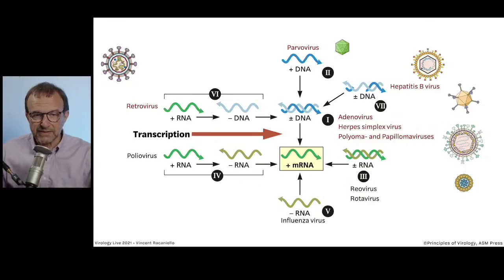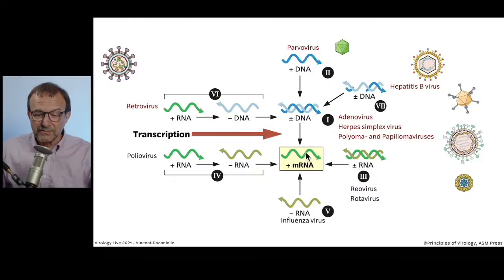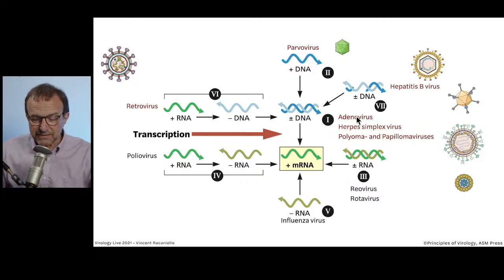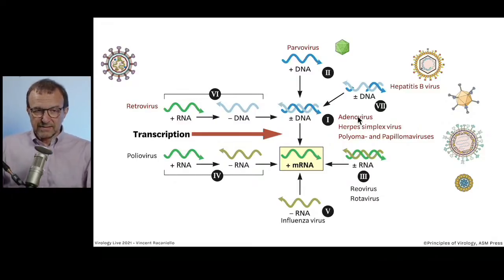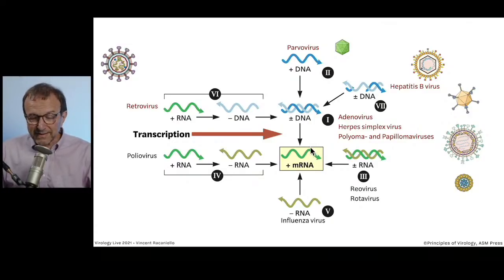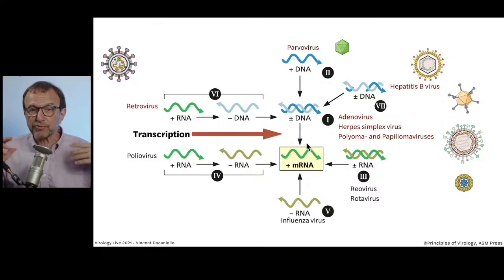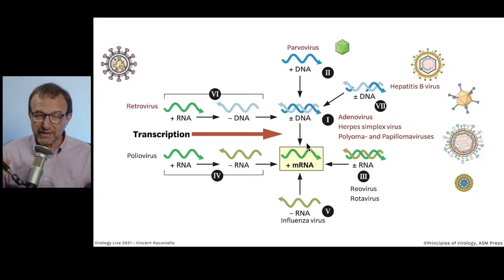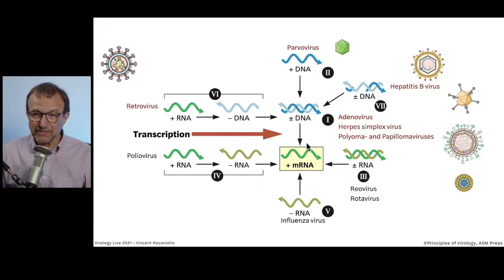Let's summarize. Transcription is the production of mRNA from double-stranded DNA. It occurs with all of these viruses. Today we're going to talk about the process of transcription — the nuts and bolts — and then the fact that in many cases transcription doesn't give you mRNA directly. It gives you a precursor to mRNA, which must be processed further to get an mRNA. Hence the name of this session: Transcription and RNA Processing.